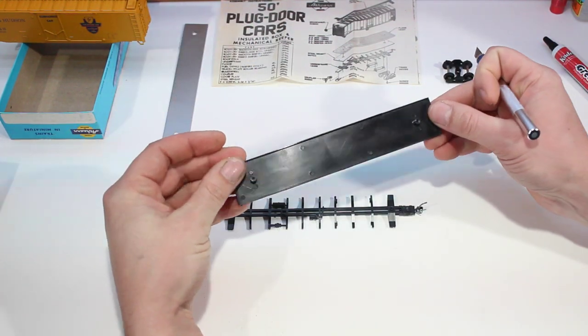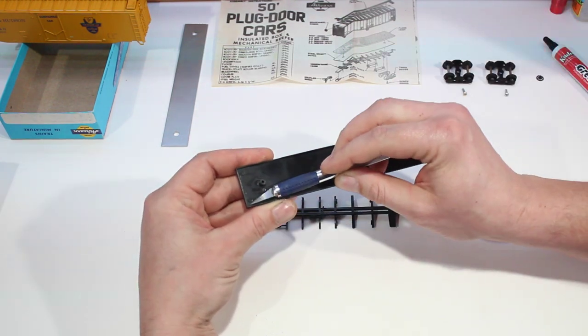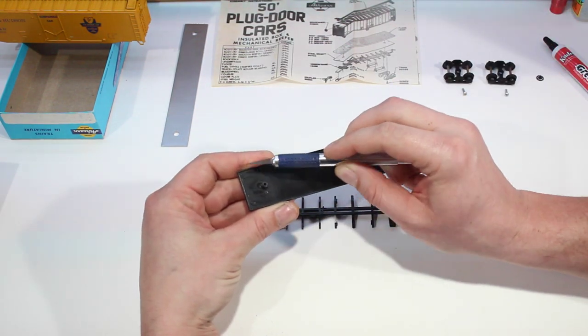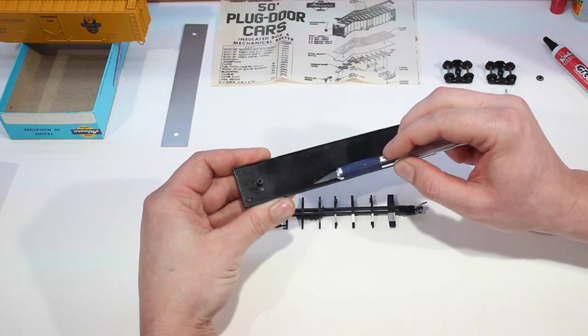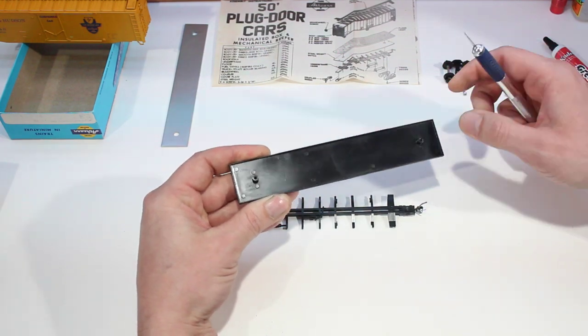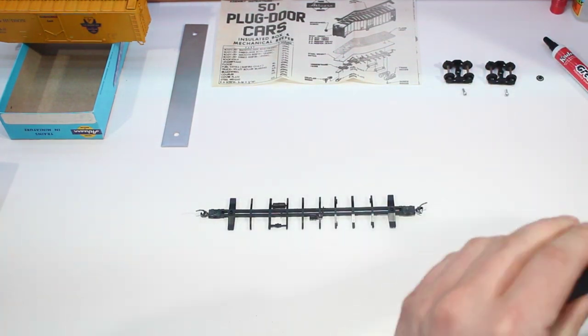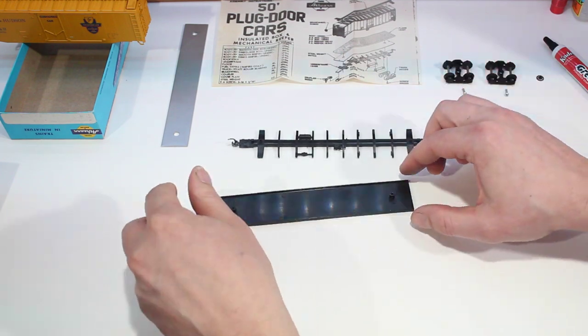Once we have that all done, the next thing we're going to do is take our floor. Again, we're going to check for any flashing that's sticking up anywhere from the molding to make sure that the weight is going to sit down nice and flat.